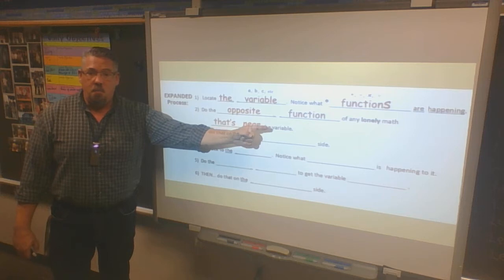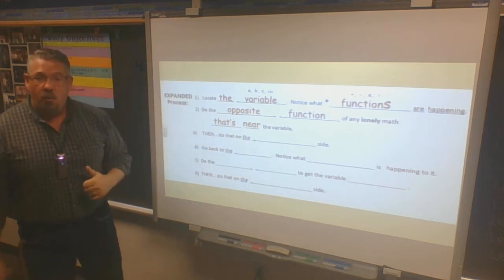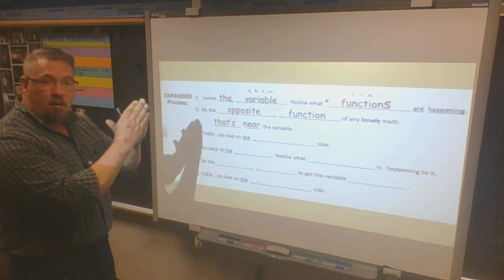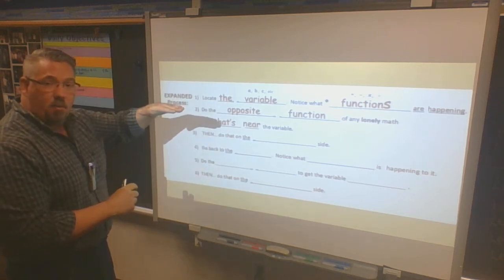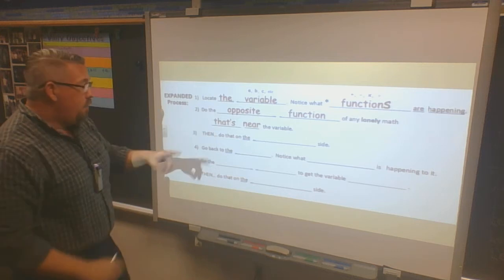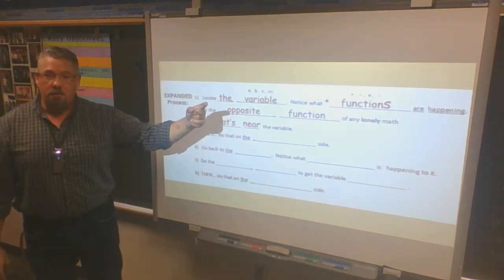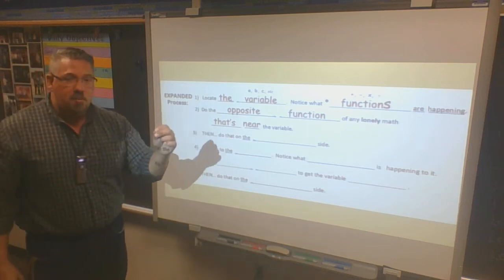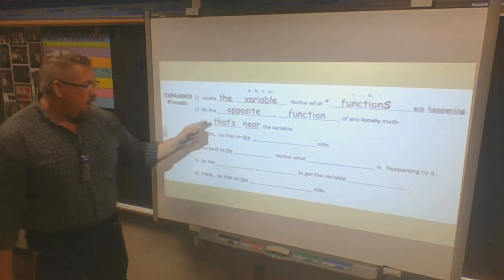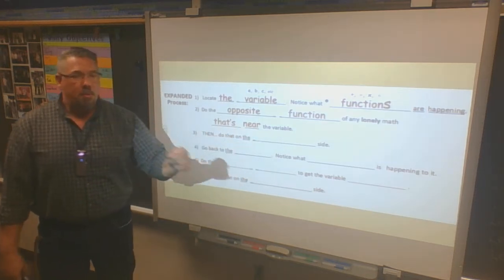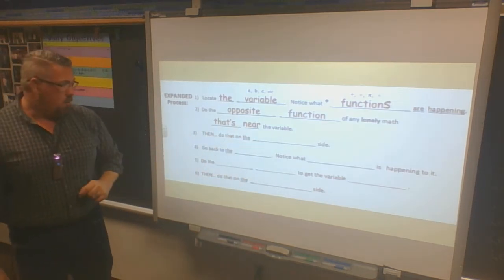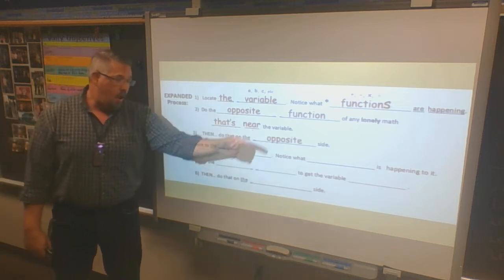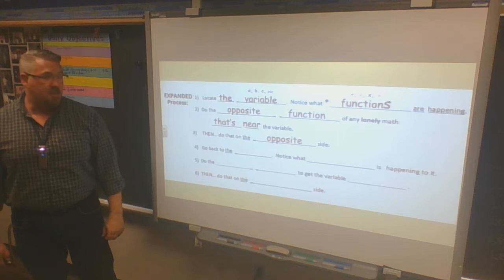Step two is the opposite function of any 'lonely math' near the variable. On problem one, adding 8 to h was directly connected to my variable, but dividing by 2 was what we'd call the lonely math function — not directly connected to the variable. I always have to identify which step to do first: it's the one near the variable but not directly connected to it.